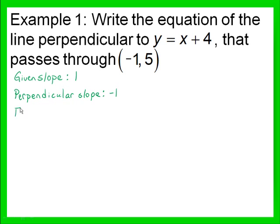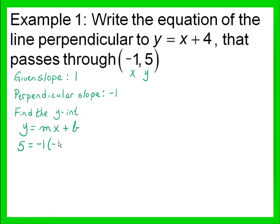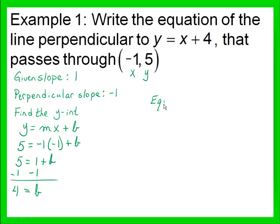Next, find the y-intercept. To do that, we're going to plug our numbers from the ordered pair in for x and y into the slope-intercept format. So y is 5, the slope that we're using is negative 1, and our x value is also negative 1. We're looking for b. So we have 5 equals 1 plus b. Subtract 1 from both sides, and we get that 4 equals b.